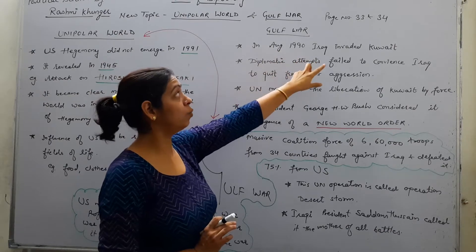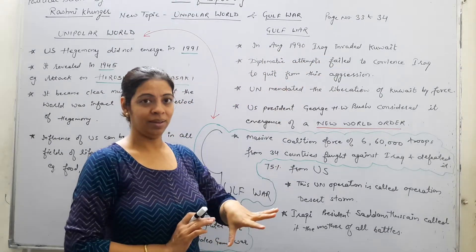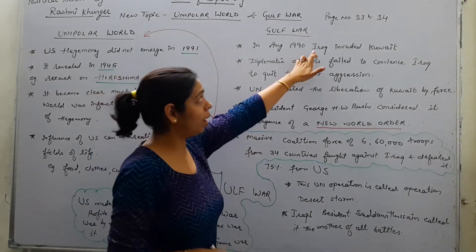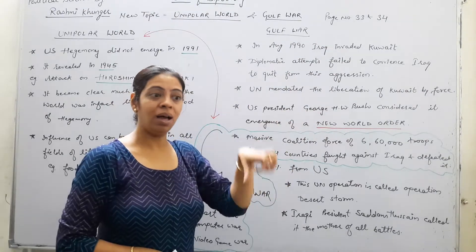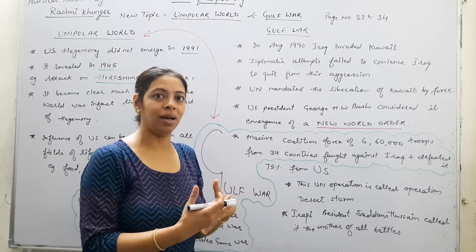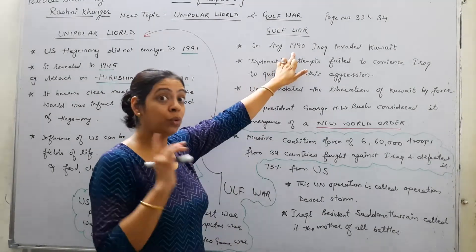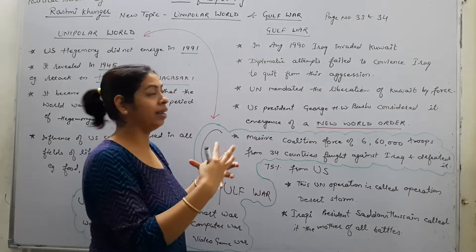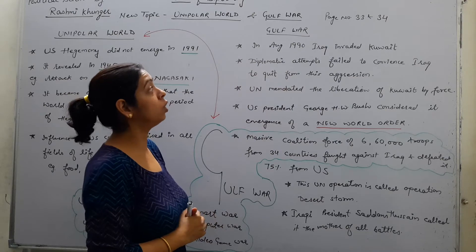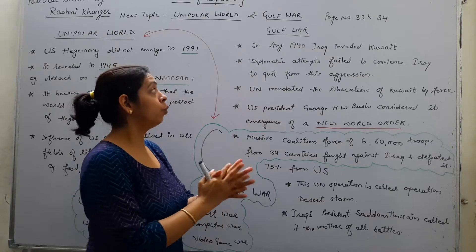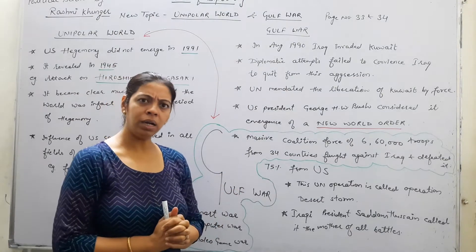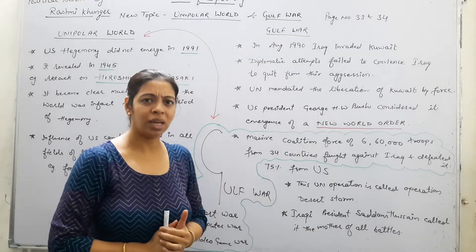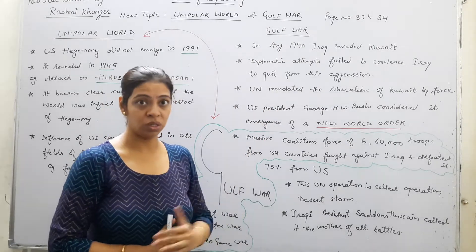In August 1990, Iraq invaded Kuwait. This region is called the Gulf area, which is why it's called the Gulf War. Iraq attacked Kuwait and tried to take control of it. This happened during the Cold War period. Iraq did this primarily for oil resources. Diplomatic attempts by other countries failed to convince Iraq to stop its aggression.